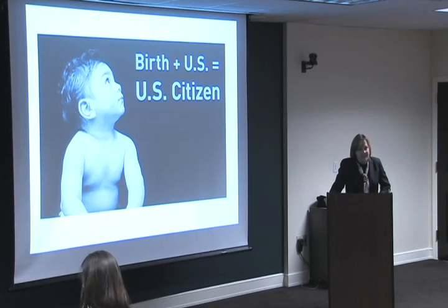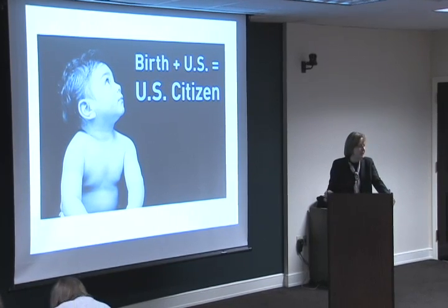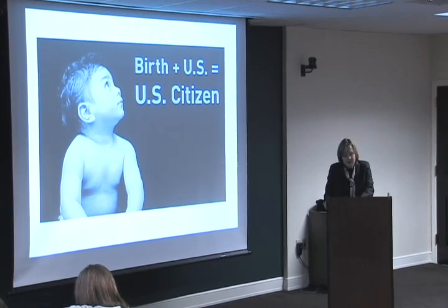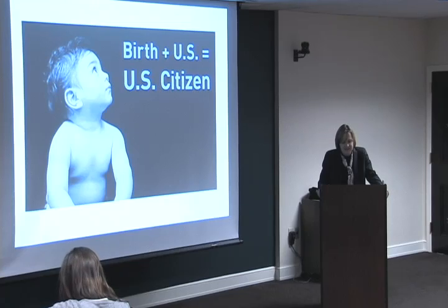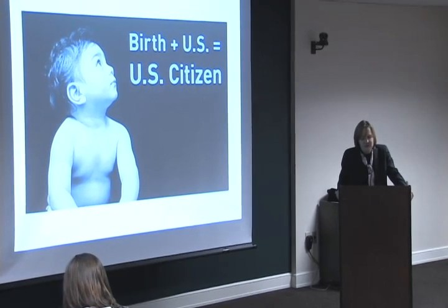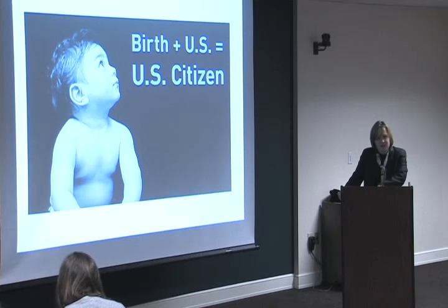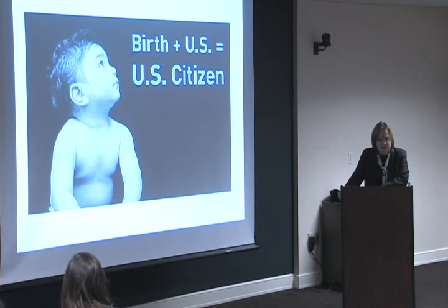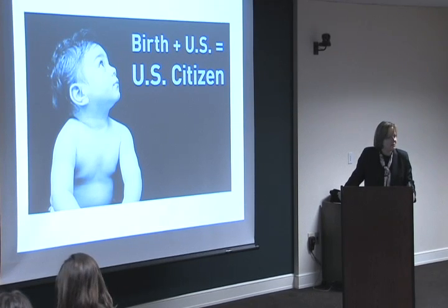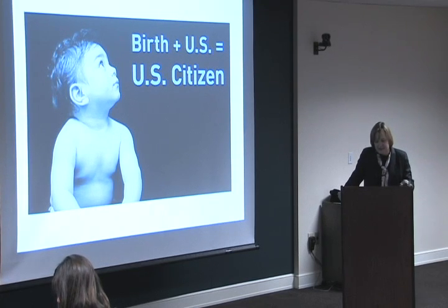There are two traditions, or legal practices, of long standing on how nations assign citizenship. These are known by the Roman terms jus soli and jus sanguinis. Both were known to Roman law, but jus soli in the Middle Ages became a distinctively common law doctrine developed in England. The notion was if you were born within the king's territory, you owed allegiance to that king, and in return the king owed you protection. So it was territorial birthright citizenship, the law of the soil, jus soli, that became a common law tradition and is the origin of the practice in the United States.